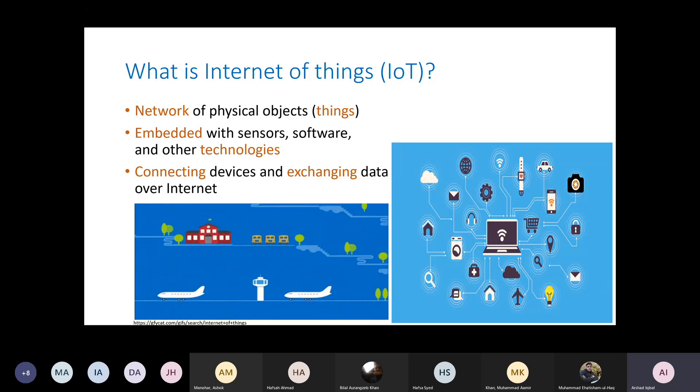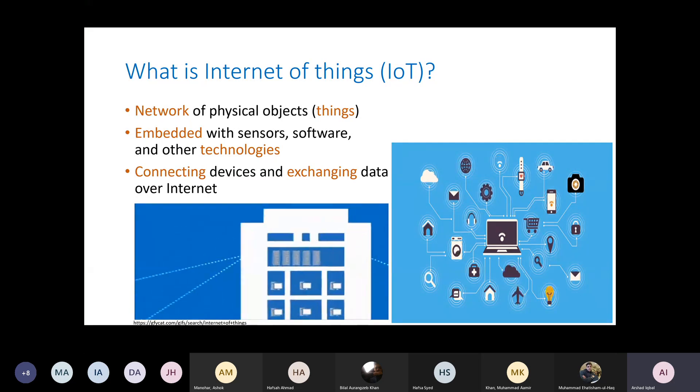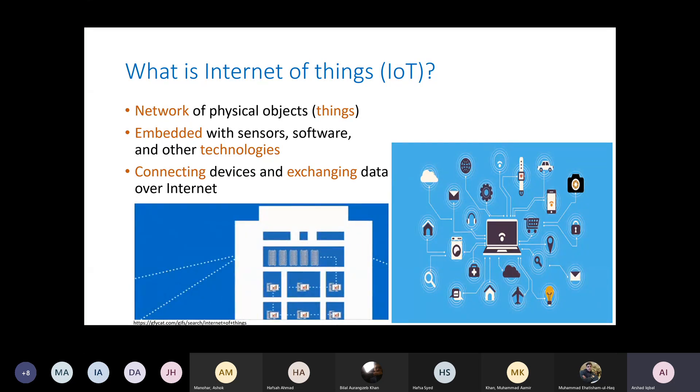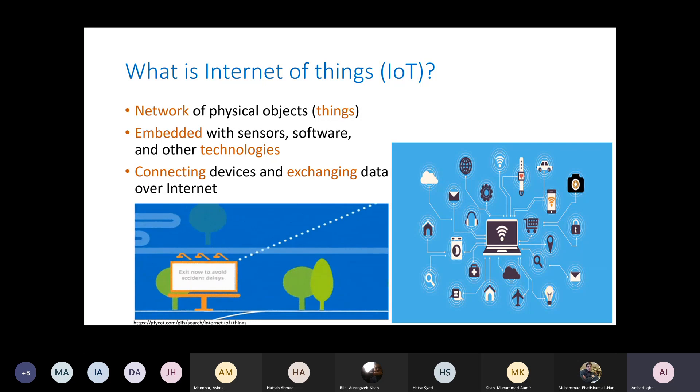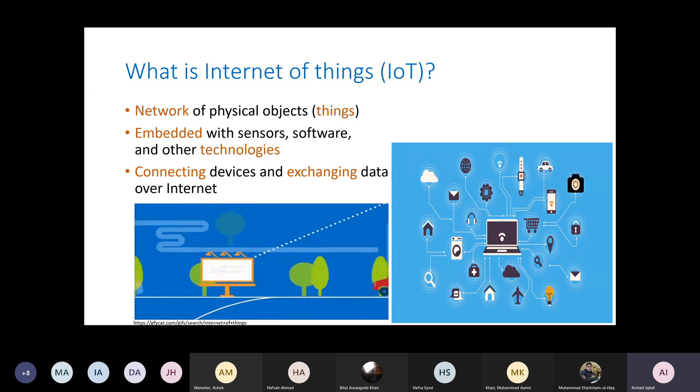What is Internet of Things? As you may know, Internet of Things is the network of physical objects or things which are embedded with sensors, software, and other technologies. The aim is to connect numerous devices for connectivity and exchanging data over the Internet.